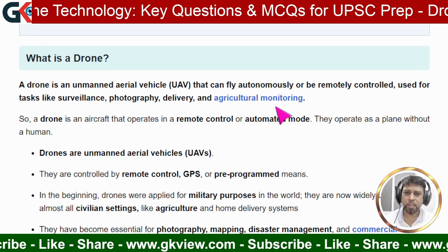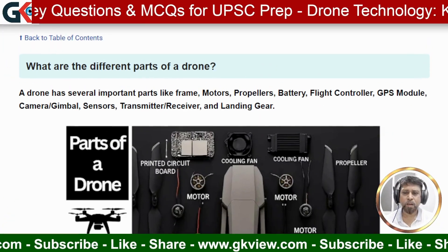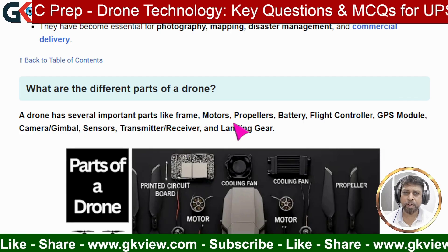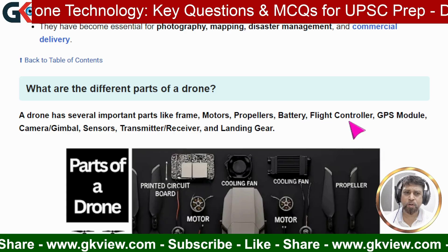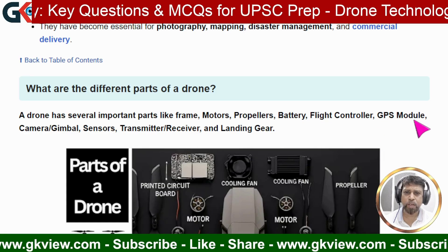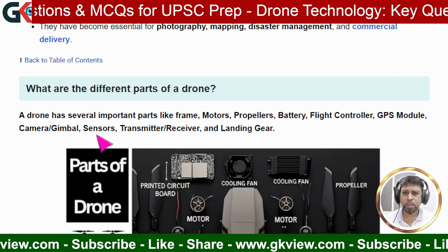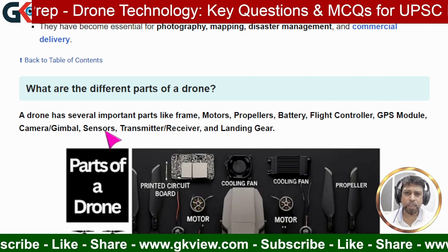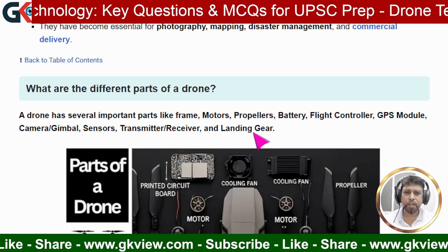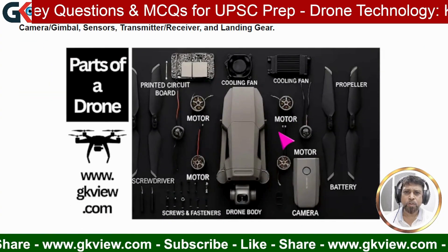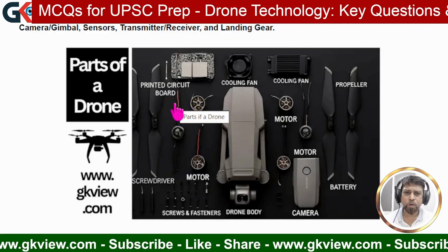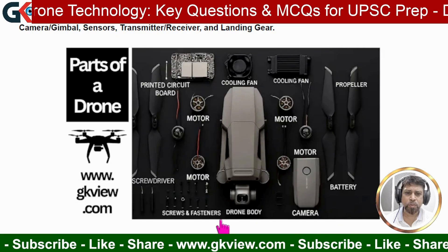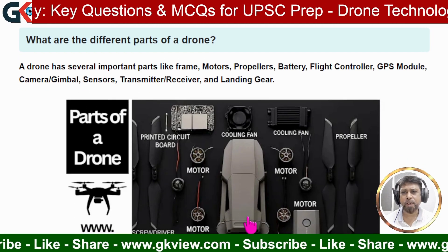The next question is: what are the different parts of a drone? A drone has several important parts including the frame, motors, propellers, battery, flight controller, GPS module (for showing location), camera, gimbal, sensors, transmitter or receiver, and landing gear for safe landing. Other parts include a printed circuit board, cooling fan, screws, fasteners, and the drone body.